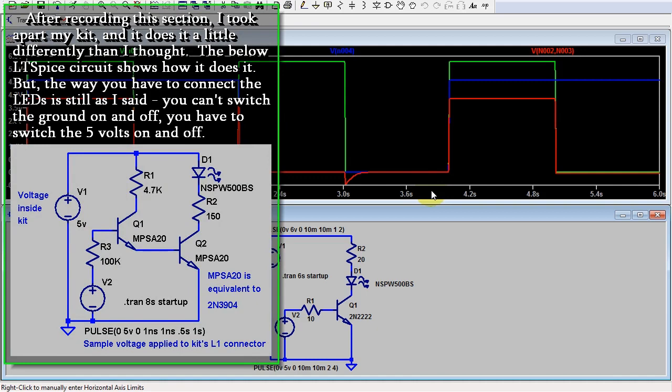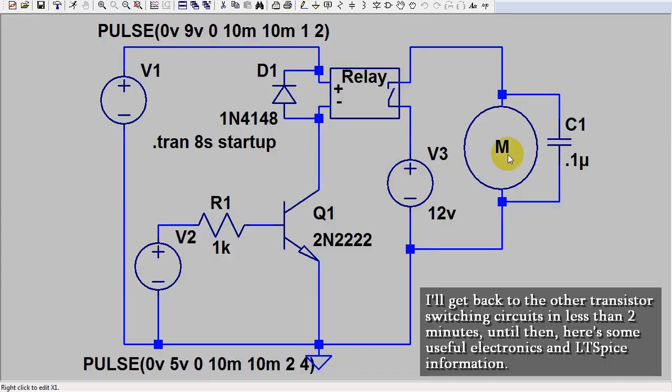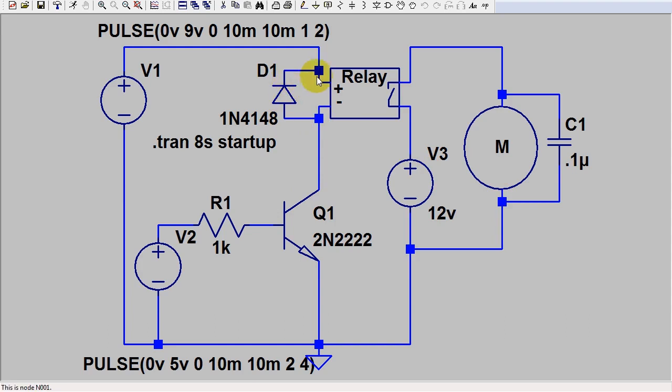I use this configuration in the robot arm I created in high school. A capacitor is put in parallel with the motor to smooth out the current spikes that can occur if the motor shaft gets stuck, or even just when the motor is first started. In my robot arm, I didn't use diodes across the relays, but I should have.